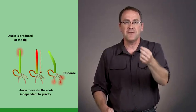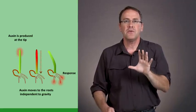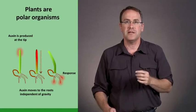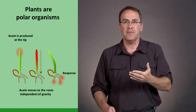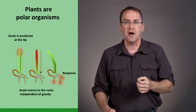To understand auxin flow from the tip to the shoot, we have to understand that plants are polar organisms—there's a difference between the top and the bottom, and the flow is always unidirectional when it comes to auxin.